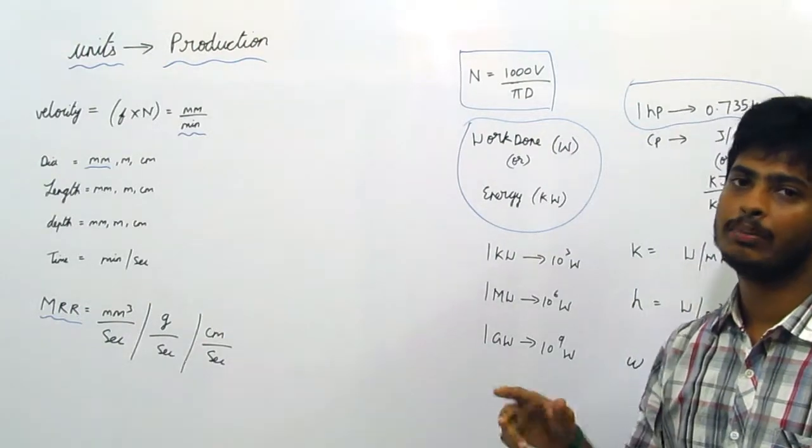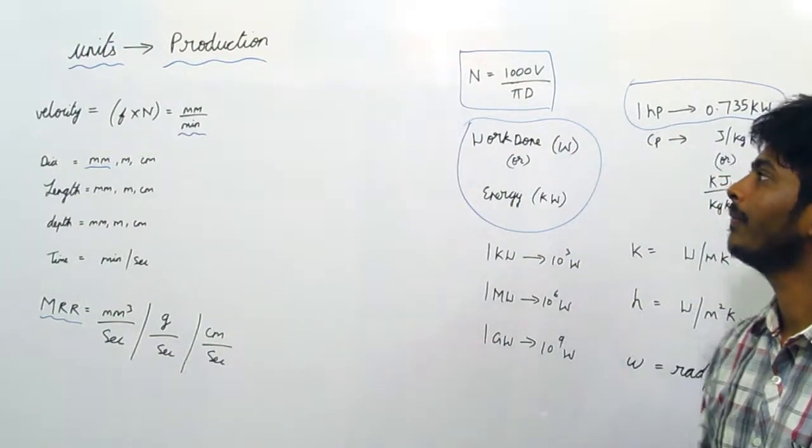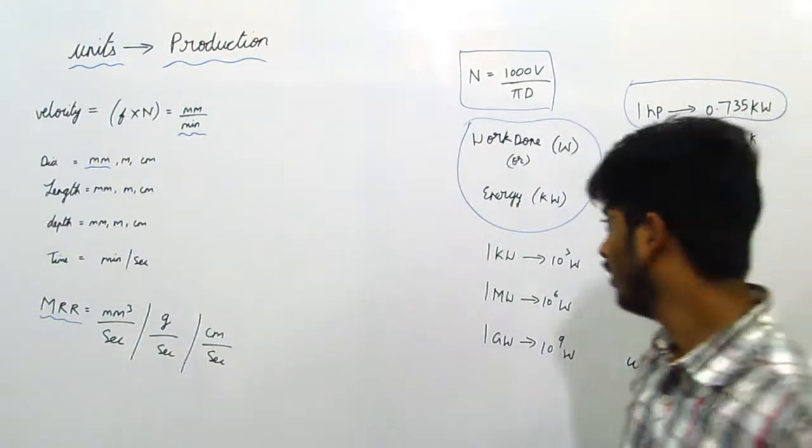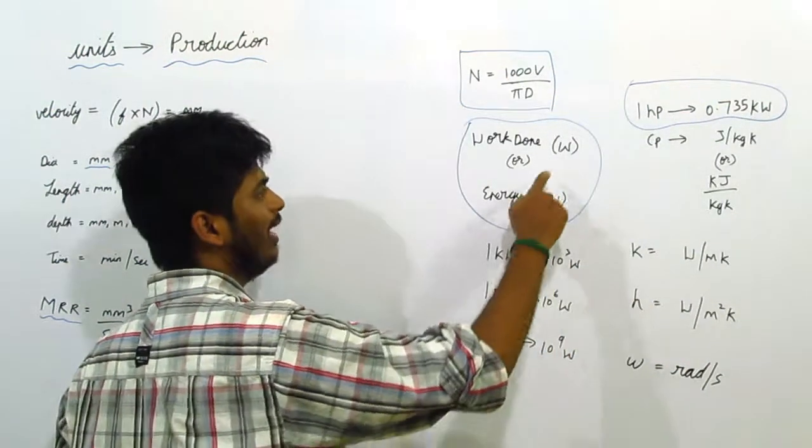So we have to convert to mm per second, and we take this thousand for the conversion. This is work or energy. It is given by watt or kilowatt.